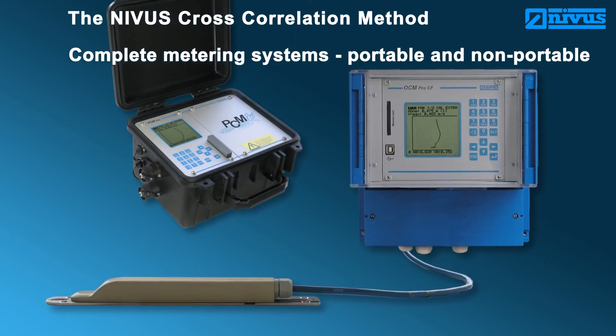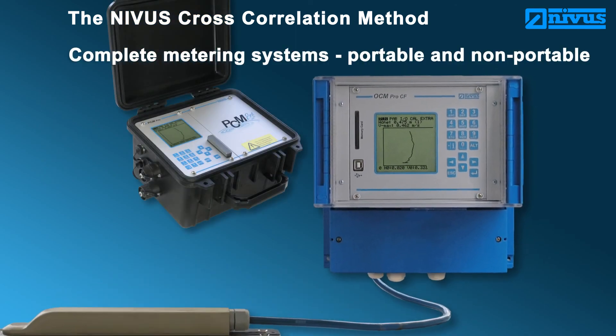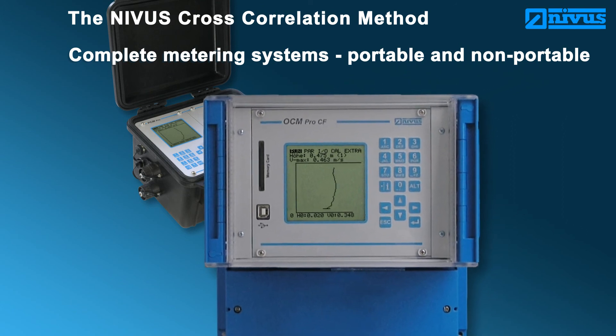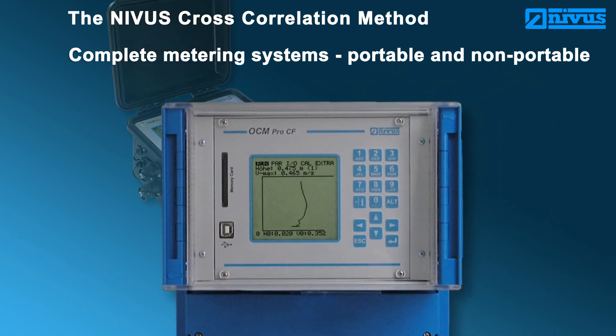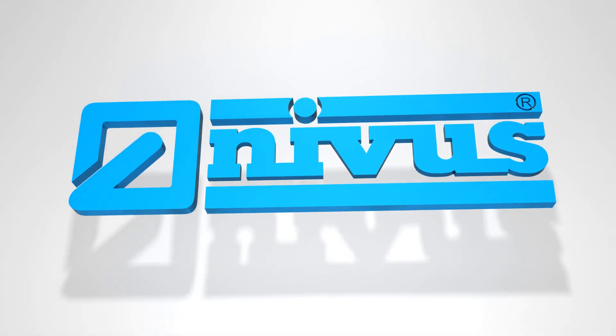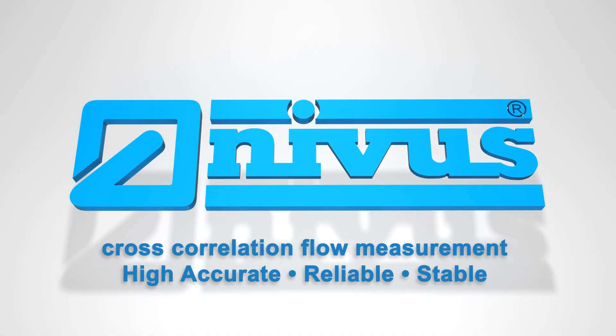Portable and non-portable metering systems. Nivus provides the perfect solution for each application. Our innovative systems stand for highest accuracy and reliability. Nivus cross-correlation flow measurement: highly accurate, reliable, stable.